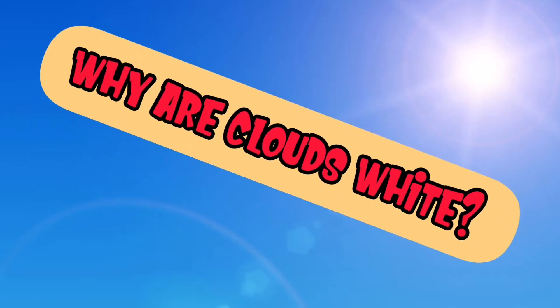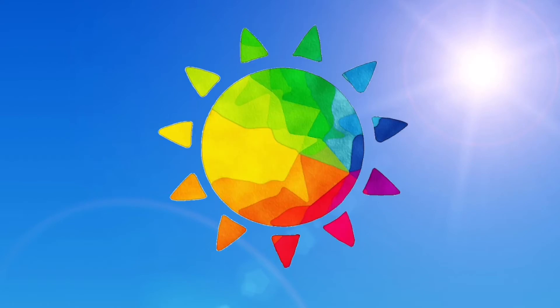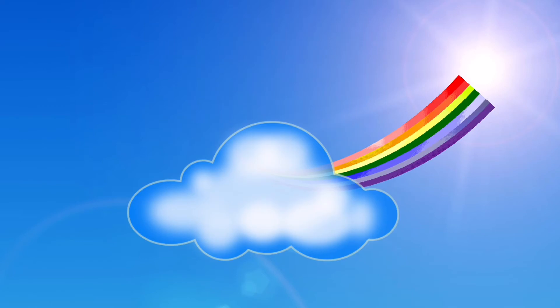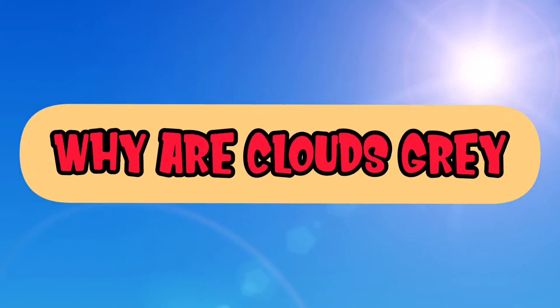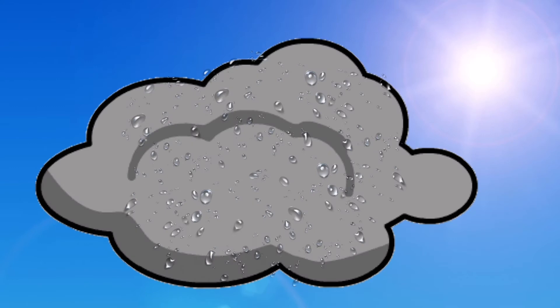Why are clouds white? Did you know that the sun's light is really made up of all the colours in the rainbow? It's true. When all the colours are mixed together, they give off what's called white light. So why do clouds sometimes look grey? When billions of water droplets form, the clouds get very thick. The sun's light cannot shine through so the clouds will look grey.